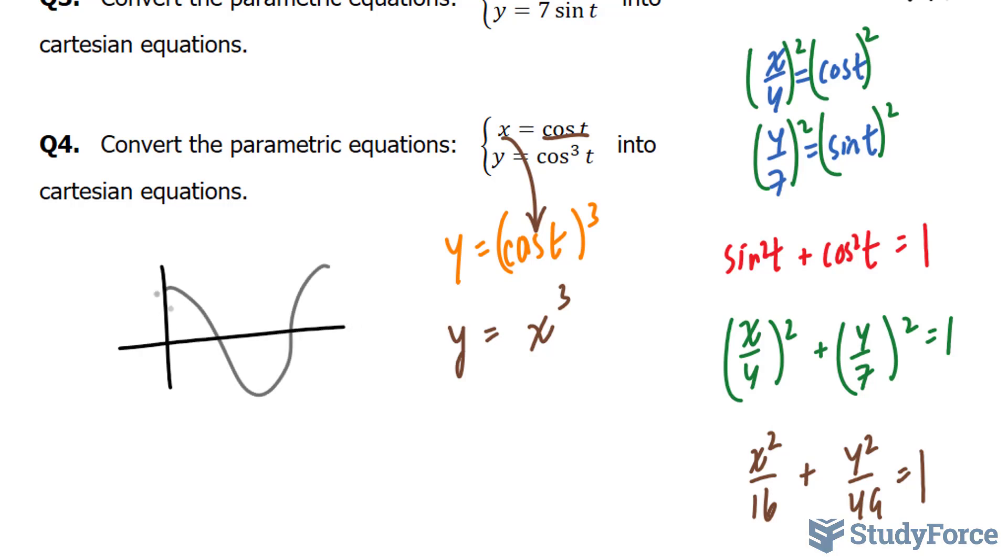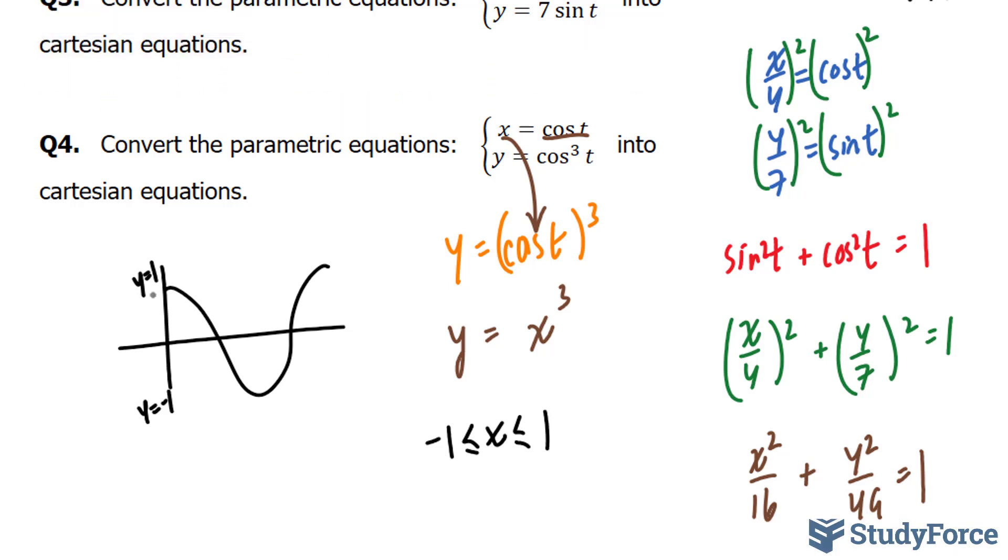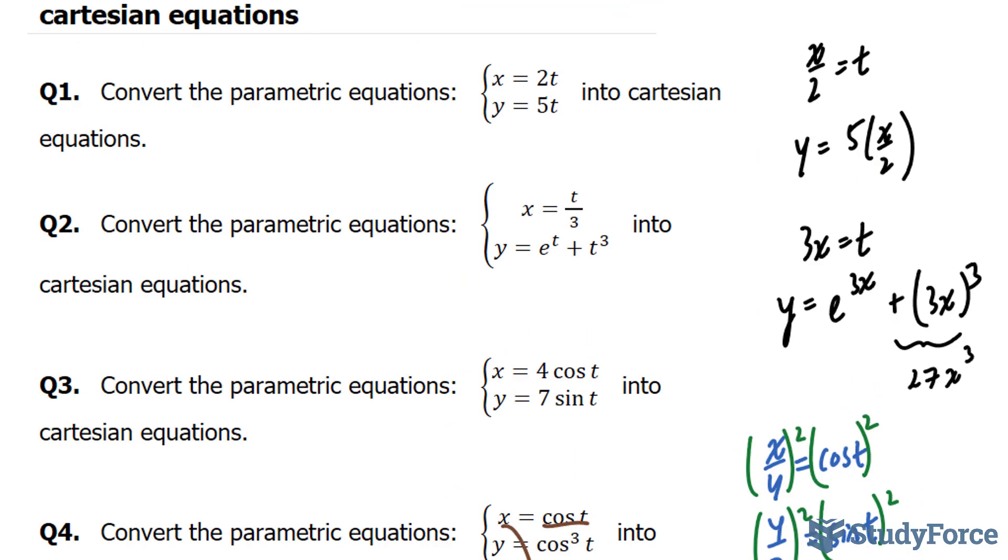remember cosine looks like this, we know that it oscillates between y is equal to 1 and y is equal to negative 1. So we have to make note that this function will have x values that are between negative 1 and 1. Because anything beyond negative 1 and 1 will give us y outputs that are greater than 1 and negative 1. And there you have it. That is how to convert parametric equations into Cartesian equations.